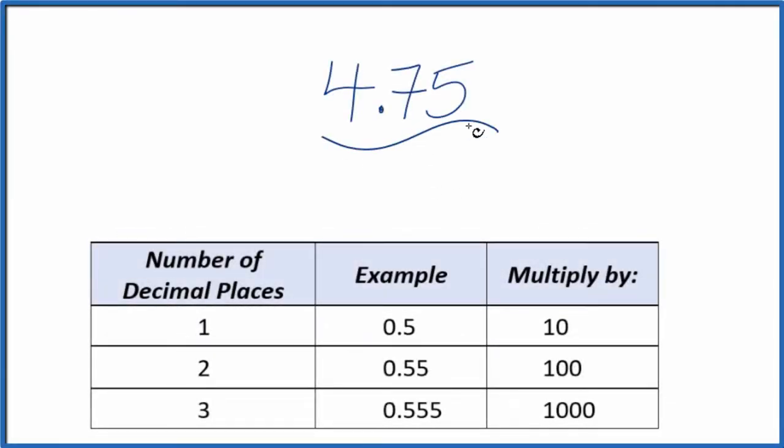If you're asked to convert 4.75 to a fraction, here's how you do it. First off, let's just call it 4.75 over 1. Since we're dividing by 1, we haven't changed the value. It's still 4.75, but now we have the start of a fraction.